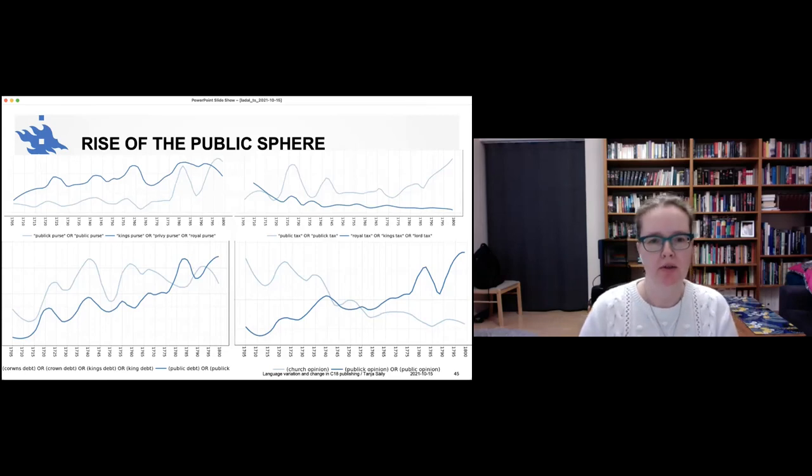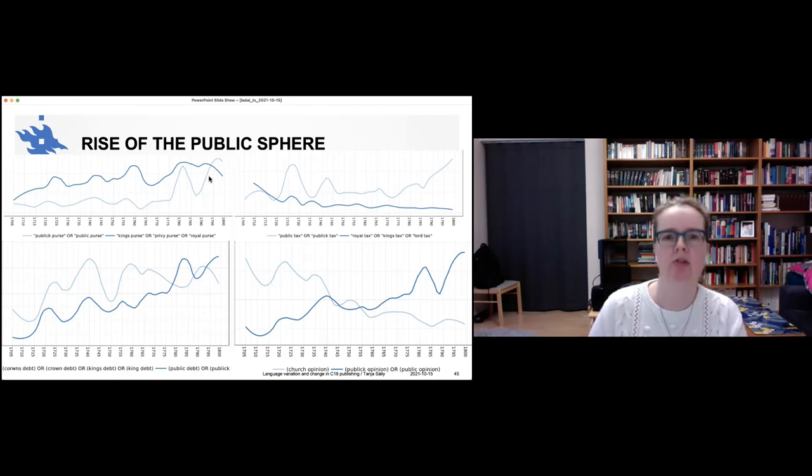Right. So about the rise of the public sphere. So indeed we get things. Whereas previously and even throughout the sort of 18th century, we talk about the king's purse or the privy purse or the royal purse. Towards the end of the century, we talk more about the public purse. So, and then looking at the royal tax, king's tax, lord tax, that definitely goes down and public tax goes up. So we don't think about it in terms of the king or sort of one ruler anymore. We think about the public as a whole. These are public affairs. And again, like crown's debt, king's debt, so on. At the end, we get more of public debt. And then there's this neat crossover with religion. So church opinion goes down, public opinion goes up.